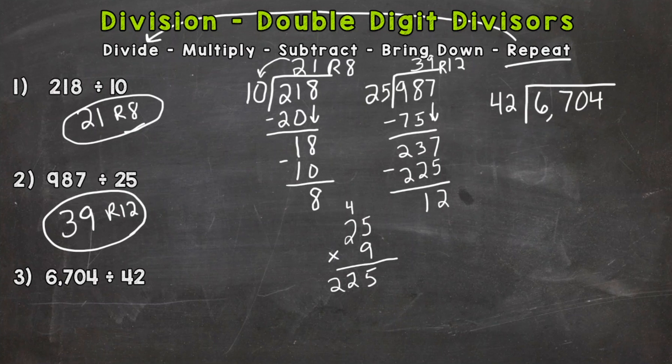When we divide, that one needs to go above the 67, not the 6. So after we divide we multiply: 1 times 42 is 42. Subtract: 7 minus 2 is 5 and 6 minus 4 is 2. We need to bring down the 0, so now we have 250 divided by 42.